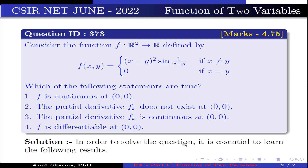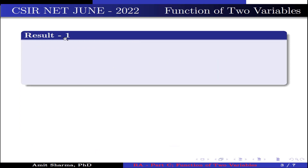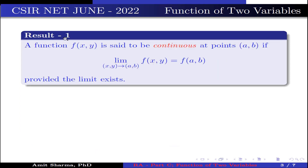In order to solve the question, it is essential to learn the following results. Result number 1: a function f(x,y) is said to be continuous at point (a,b) if the limit as (x,y) approaches (a,b) of f(x,y) equals f(a,b), provided the limit exists.